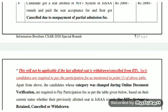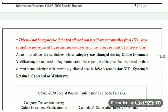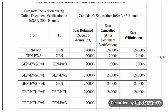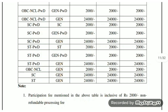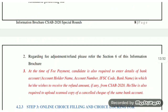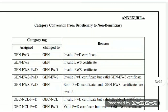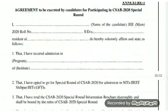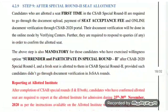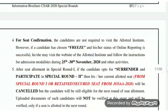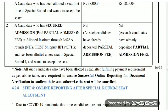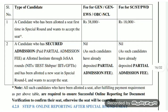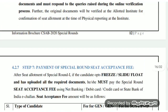Check the general PWD — the physical handicap category is different. We have a certificate requirement and some instructions. We have 3 options: freeze, float, or slide. We can add 3 more options. You can download this brochure and check any of these.